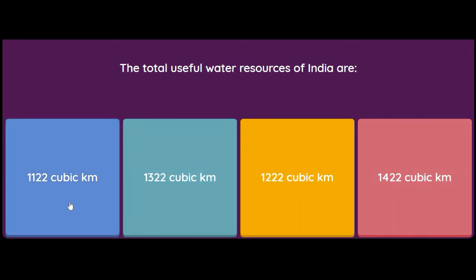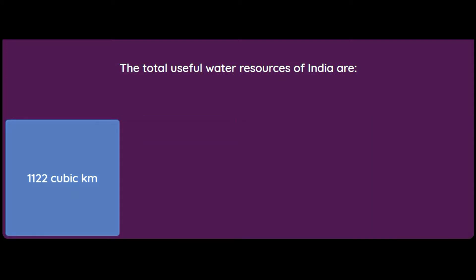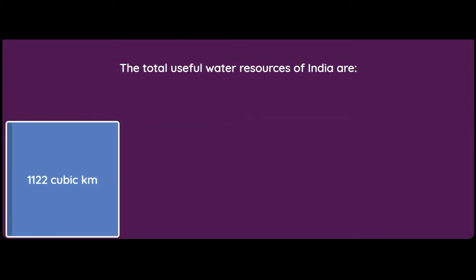What are the total useful water resources of India — 1122, 1322, 1222, or 1422 cubic kilometers? The answer is 1122 cubic kilometers.